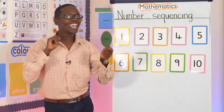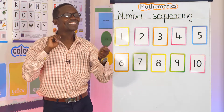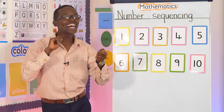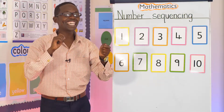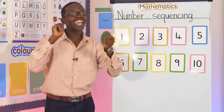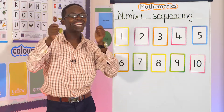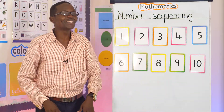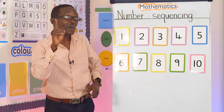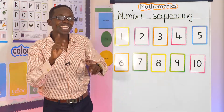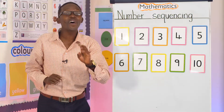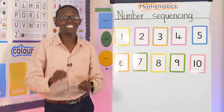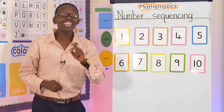Shake, shake the mango tree. The mango tree, the mango tree. Shake, shake the mango tree. Down for the mangoes. One, two, three, and four, five, six, seven, eight, nine, ten.